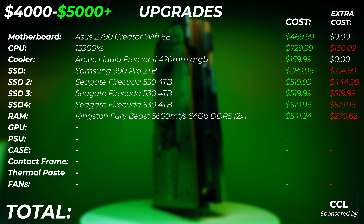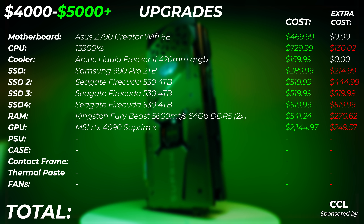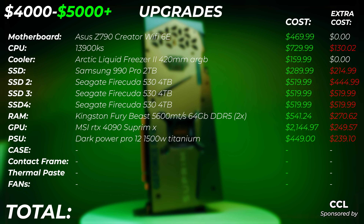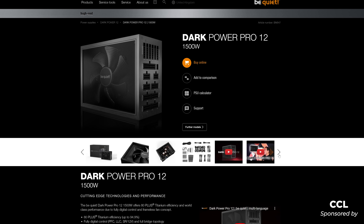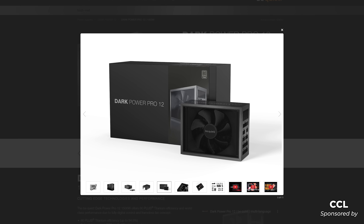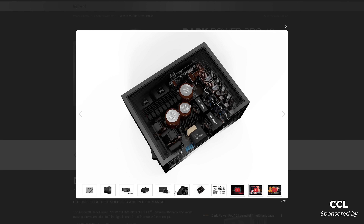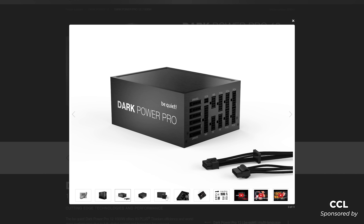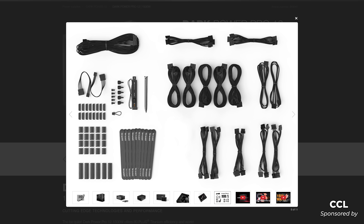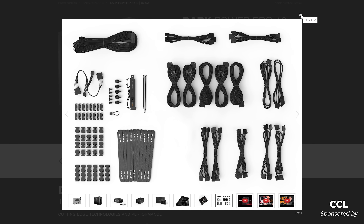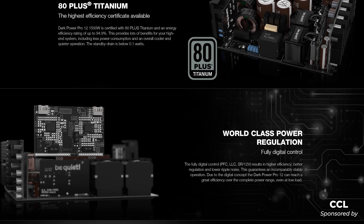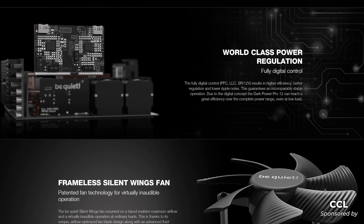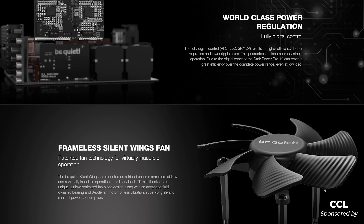For the PSU upgrade, we're going to the Be Quiet Dark Power Pro 12, 1500 watt, 80 Plus Titanium — a balls-to-wall power supply that costs $450. It's got enough juice to power two 4090s if you wanted. It's also super energy efficient, which matters a lot if you're running this PC more than eight hours a day or rendering 24/7 — especially in Europe where electricity prices are through the roof right now.